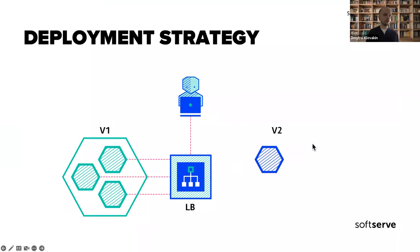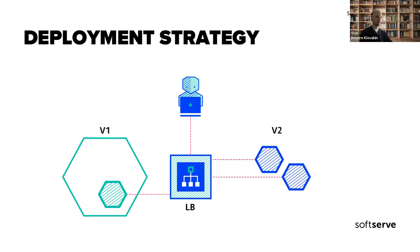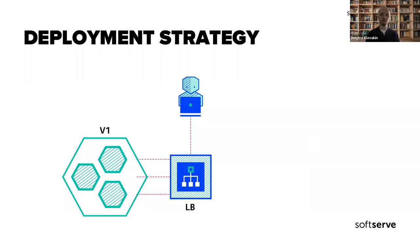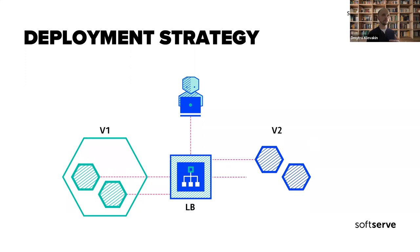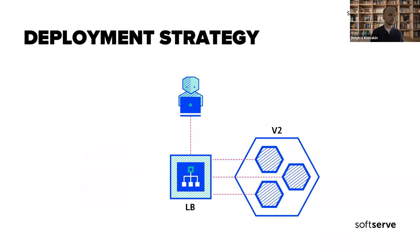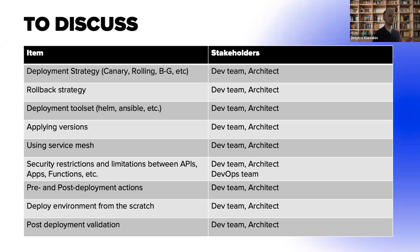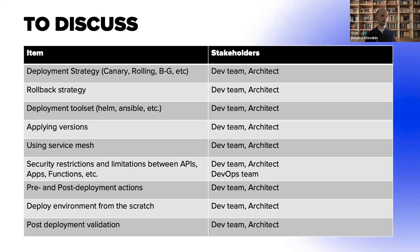Going deeper, when discussing deployment strategy, I'm sure you've heard about zero-downtime deployment strategies like rolling updates, canary releases, and blue-green deployment. At this stage you need to discuss it because it will affect the release process and should be aligned with client requirements. You should also discuss rollback strategy, deployment toolset, how to apply versions or patches, whether you need a service mesh, and security restrictions between APIs, applications, and functions.